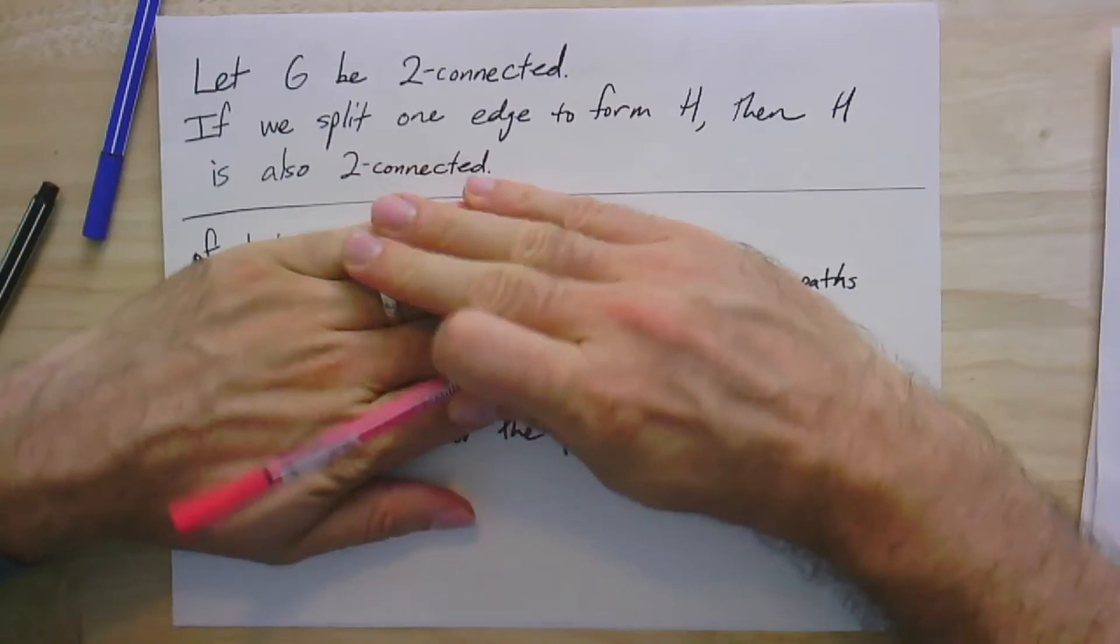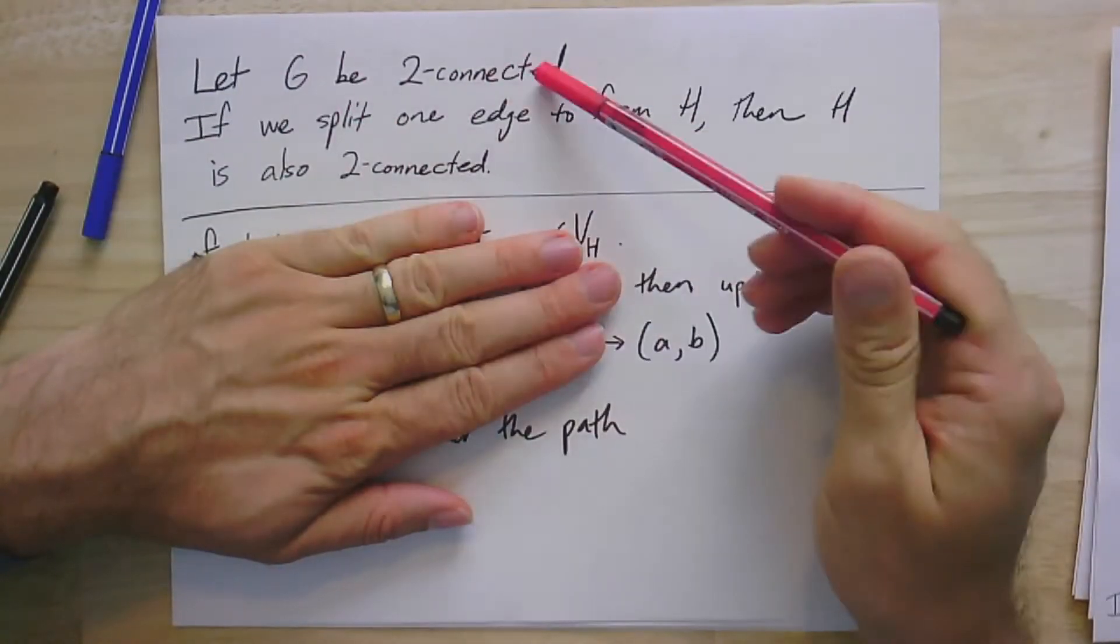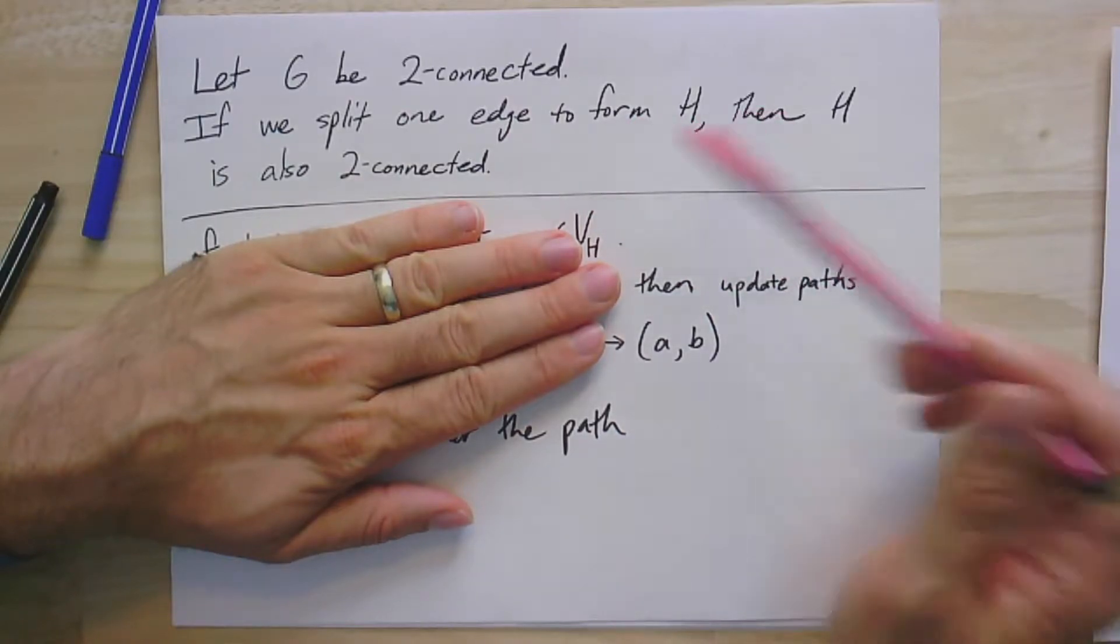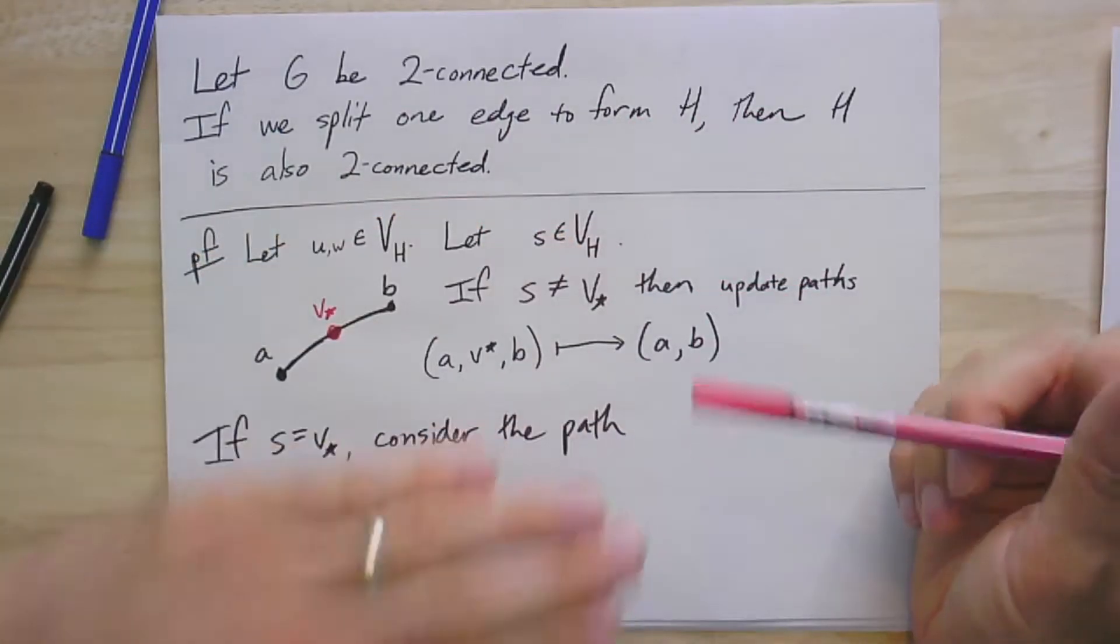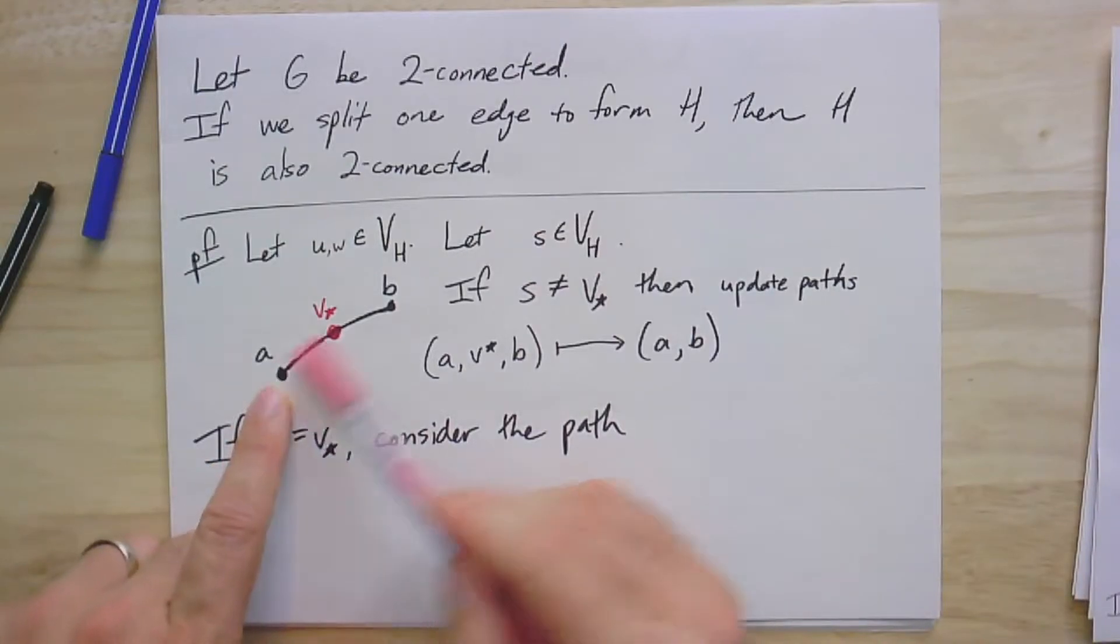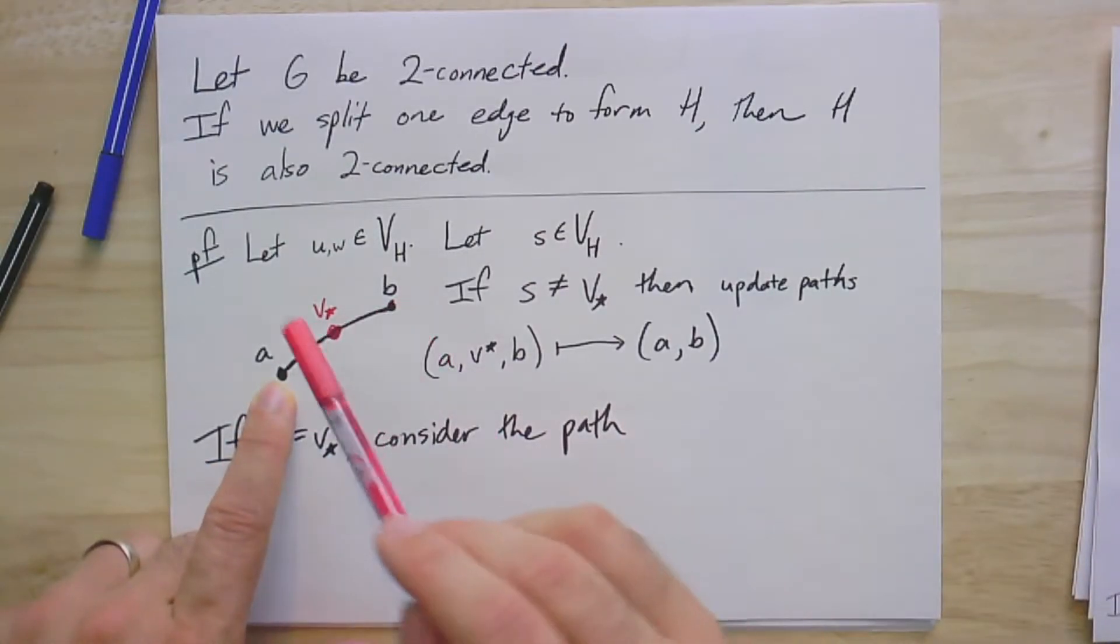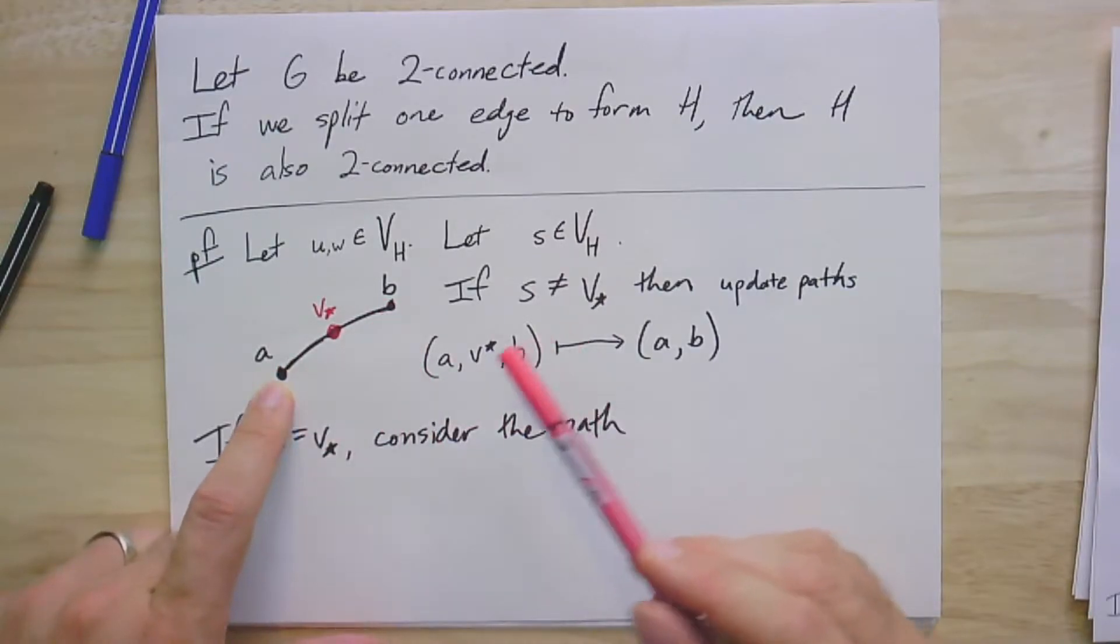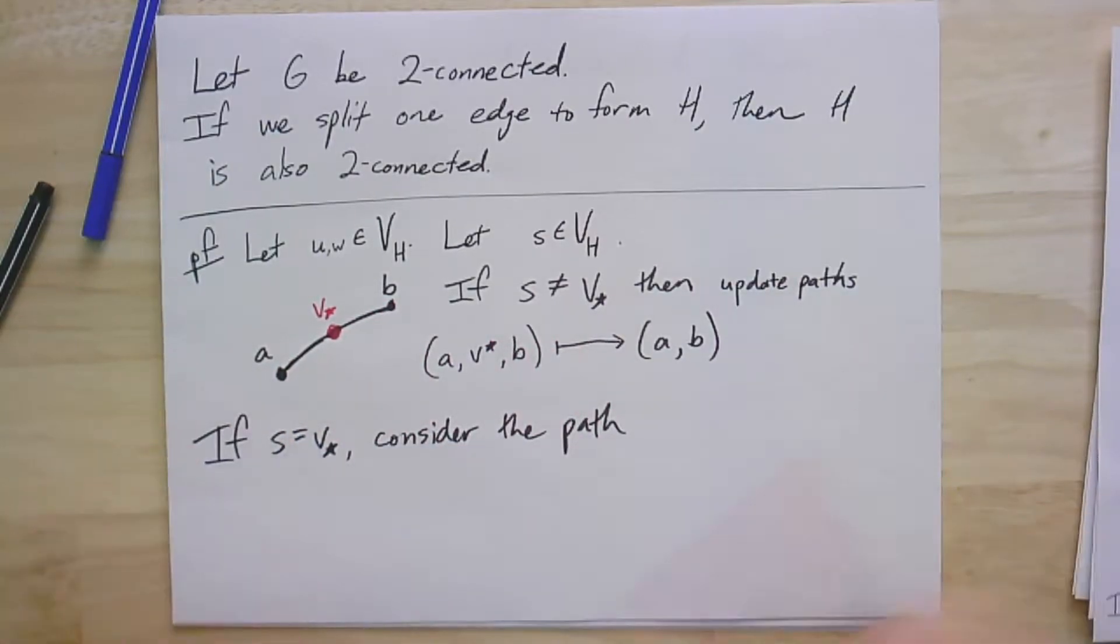If G is a two-connected graph, and if we split one edge to form the new graph H, then H is going to also be two-connected. So in pictures here, we had some edge somewhere in G, and we stuck a new vertex right in the middle. And so this breaks this one edge into a path of length two here, and the claim is that the graph will still be two-connected.